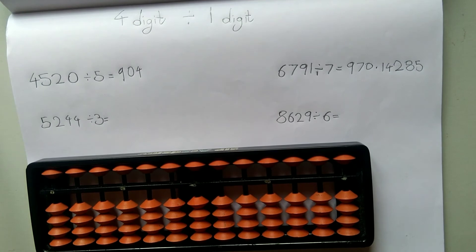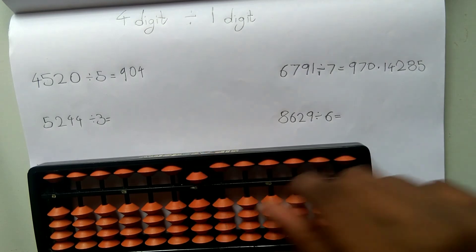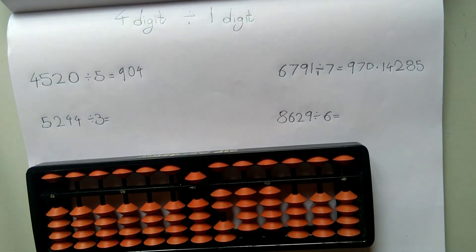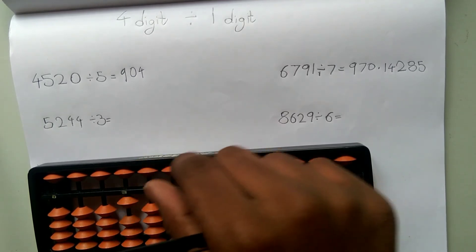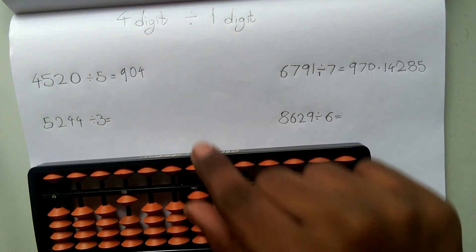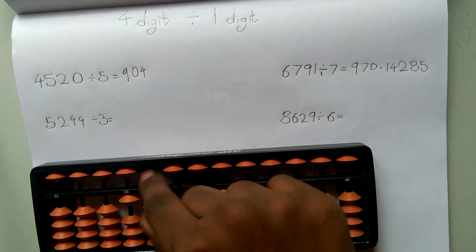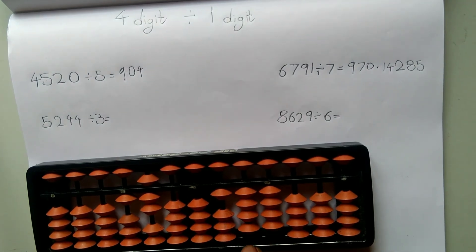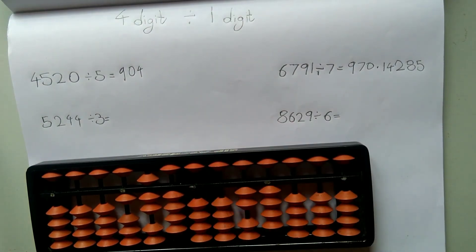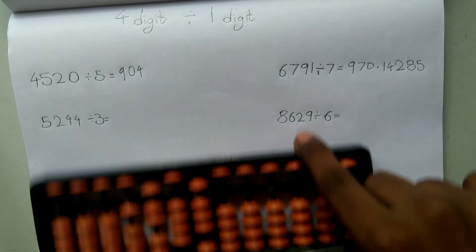Now let's do the next problem: 5244 divided by 3. First, represent 5244 on the question set. Let's check the first digit: 5. It is greater than 3, so we can use it. 3 ones are 3, and 5 minus 3 is 2. Include the next digit — it becomes 22. 3 sevens are 21, so I subtract 21 and represent 7. Including the next digit it becomes 14. 3 fours are 12, and now I have 24 left. 3 eights are 24. So my answer is 1748.